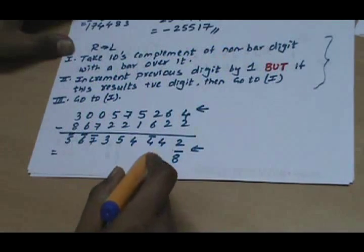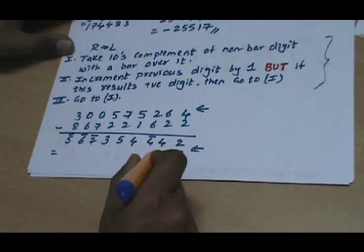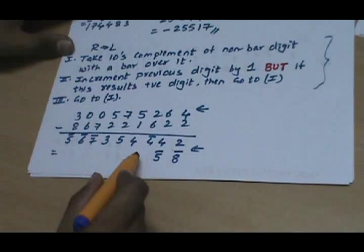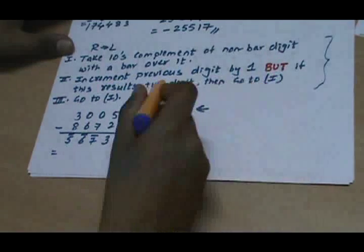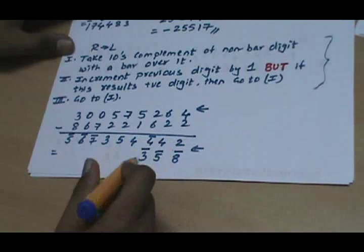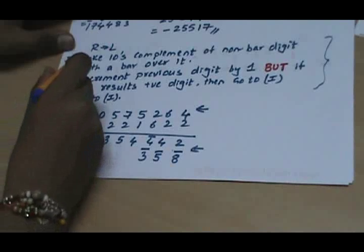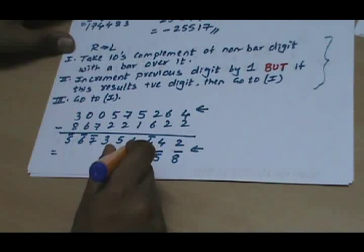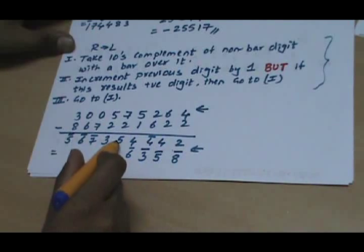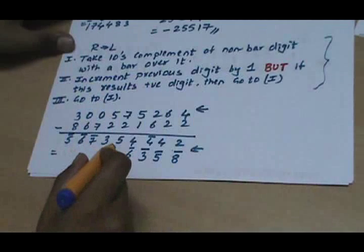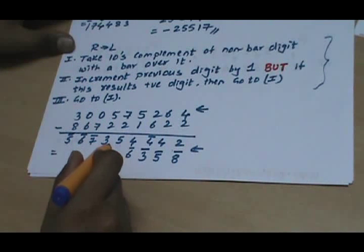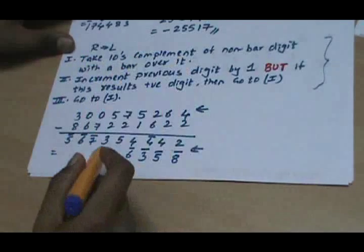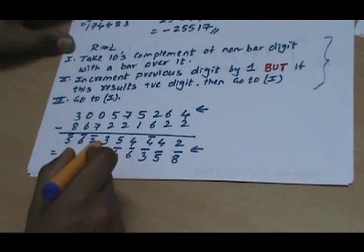We take 10's complement of that 5, giving 5̄. Go to step 2: increment the previous digit — incrementing bar 4 by 1 gives bar 3; since it is not positive we write down bar 3. Go to step 3, then step 1: take 10's complement of the non-bar digit; non-bar digit is 4, so 10's complement of 4 gives 6̄. The next digit is 5, so we increment that digit by 1 giving 6. Since it is positive, without writing anything we go to step 1 and take 10's complement of 6, which gives 4̄.